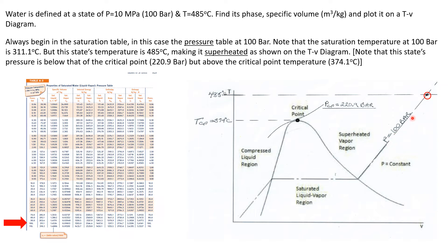Our state exists where the 100 bar line crosses the temperature line at 485 degrees C. Since 485 degrees C is above the critical point temperature of 374 degrees C, I draw it above the critical point. Where that horizontal temperature line crosses the 100 bar pressure line, that's where this state exists. We've now plotted it on the TV diagram and can see that it is a superheated vapor.